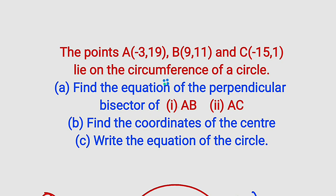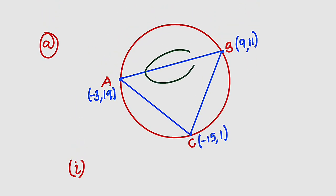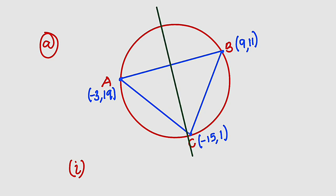We are asked to find the equation of the perpendicular bisector of line AB. If we have a line which is the perpendicular bisector of line AB, it is going to bisect it at a right angle and also divide it equally. Let's assume this is the line which bisects line AB — we want to find the equation of this line, let us call it L1. To find the equation of this line we need to know the midpoint, that is the point of intersection between L1 and line AB.